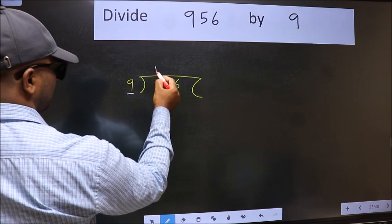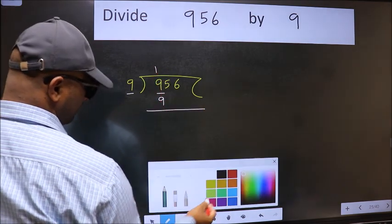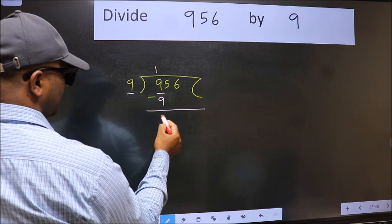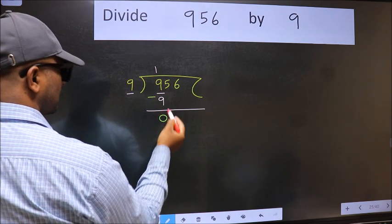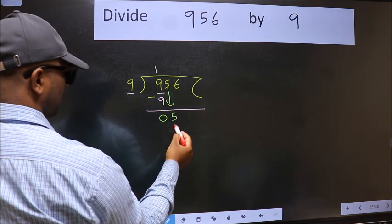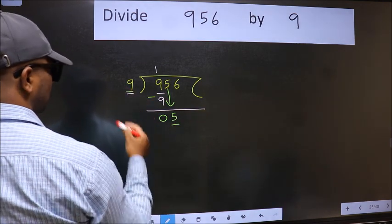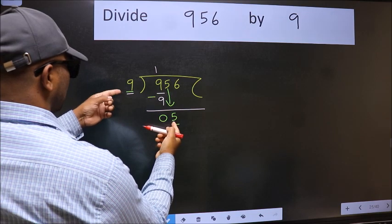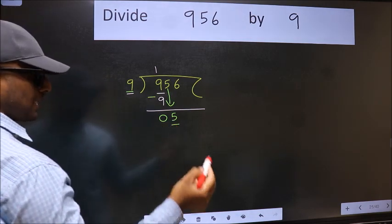9 times 1 is 9. Now we should subtract. We get zero. After this, bring down the next number, so 5 comes down. Now here we have 5 and here 9. 5 is smaller than 9, so we should bring down the second number.